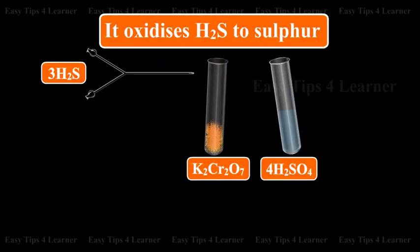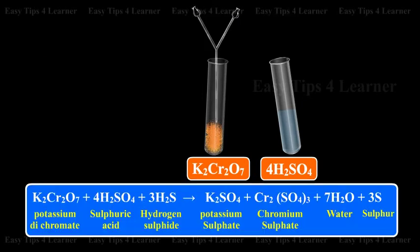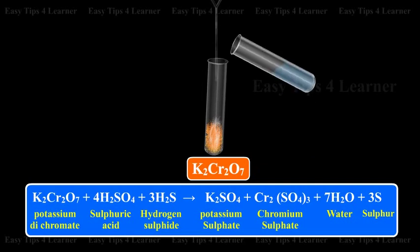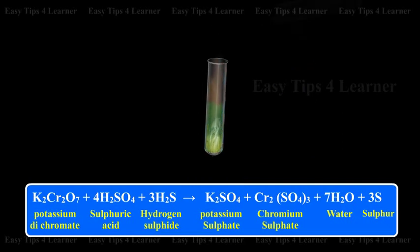It oxidizes hydrogen sulfide to sulfur. Potassium dichromate + sulfuric acid + hydrogen sulfide gives potassium sulfate + chromium sulfate + water + sulfur.